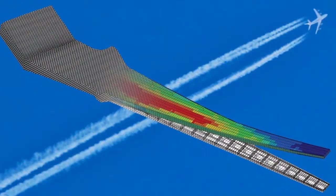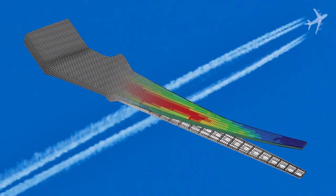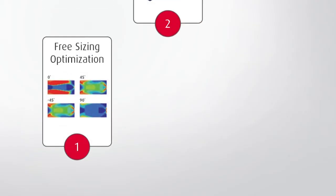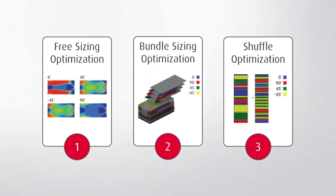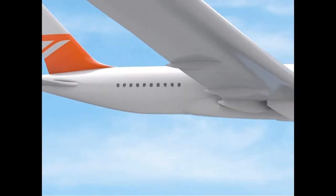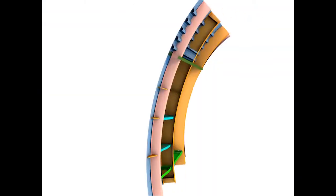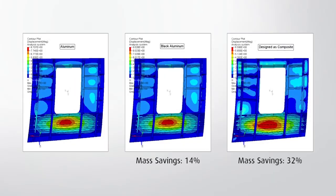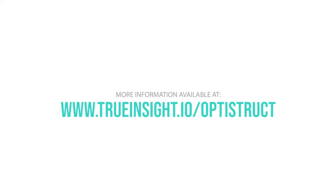If composite materials are part of the equation, Optistruct can help designers and analysts to streamline the product design process. The ply-based approach simplifies the interpretation of the concept design results from free-size optimization. Based on the optimization results, product engineers can then make part modification proposals in order to meet stress, weight, and stiffness requirements. Altair Optistruct — optimization-enabled structural analysis.